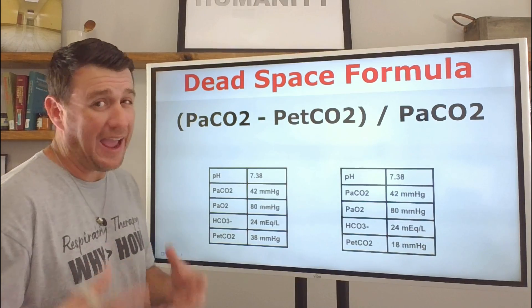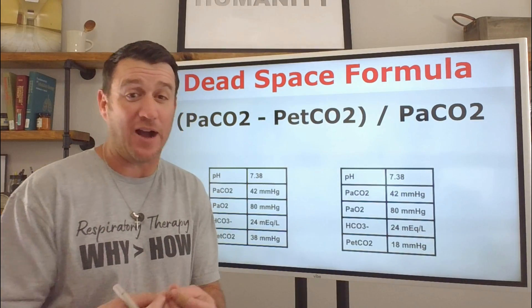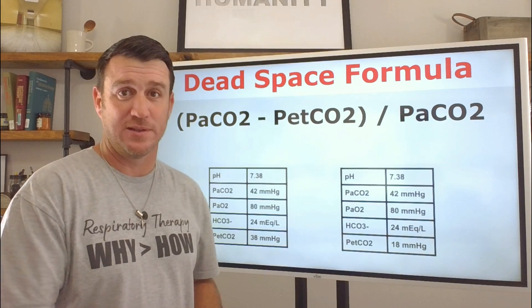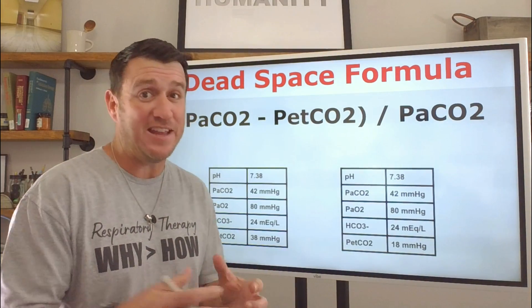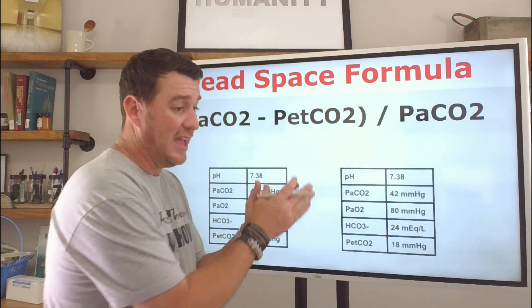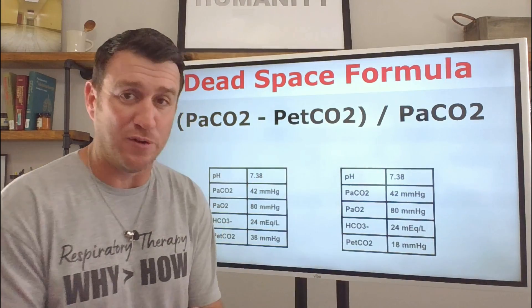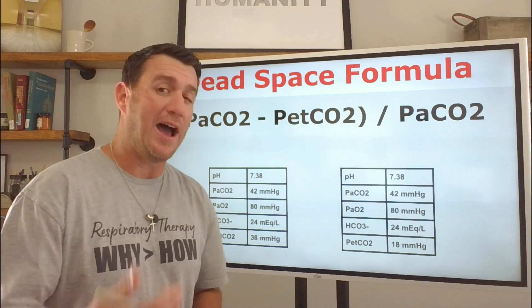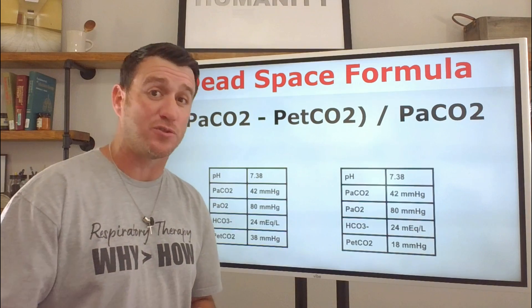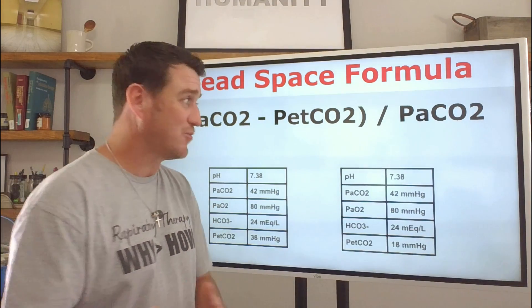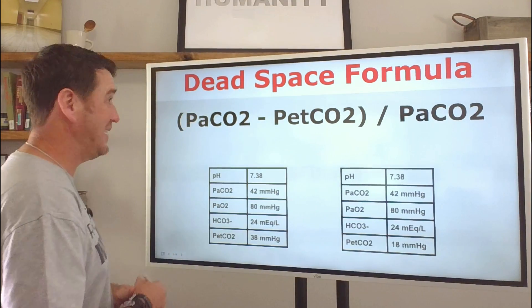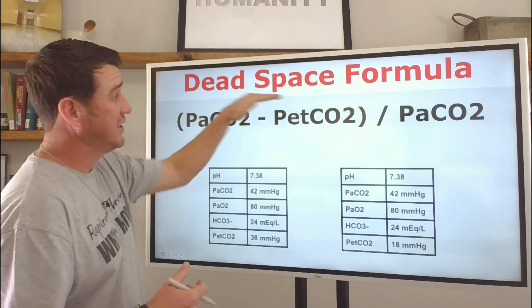Now, what this question is really asking you is, how do you calculate dead space? Because when you see VD to VT, it's saying dead space to tidal volume ratio. So how much of your tidal volume is actually effective? That's really the question that's being asked here. Now, here's the formula for the dead space formula.